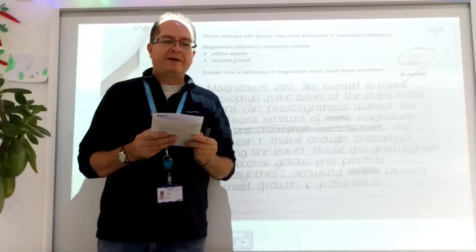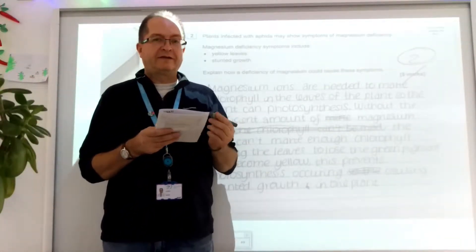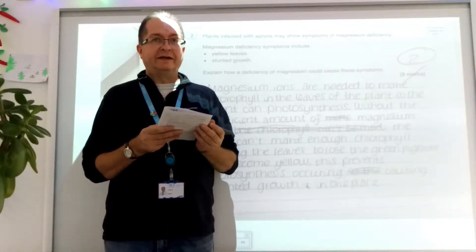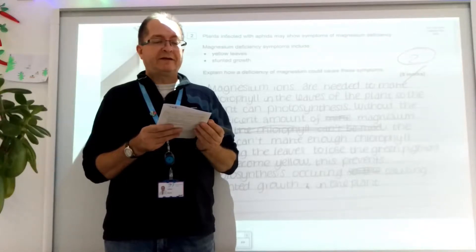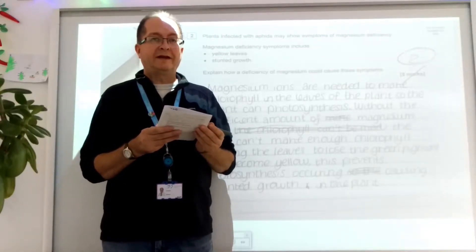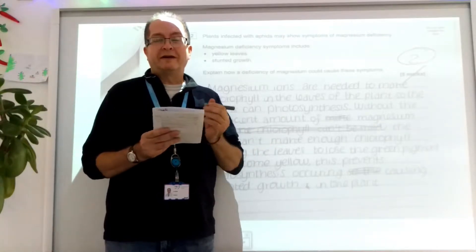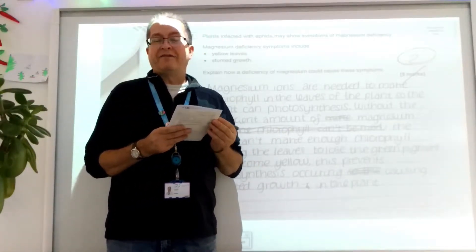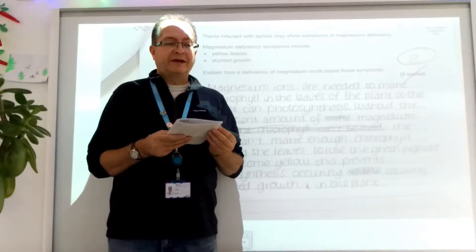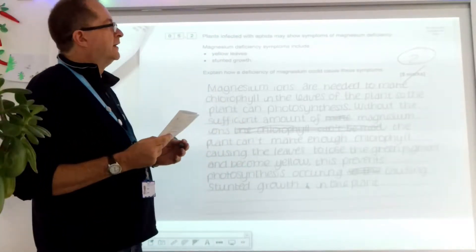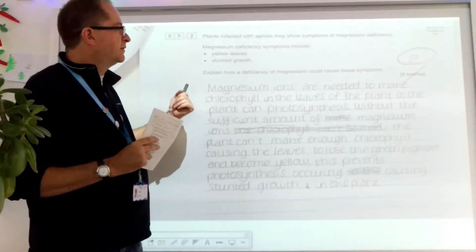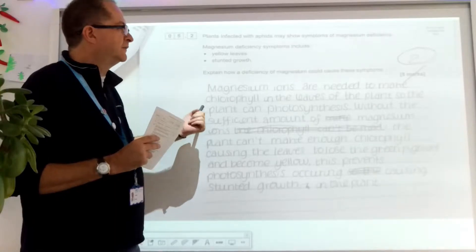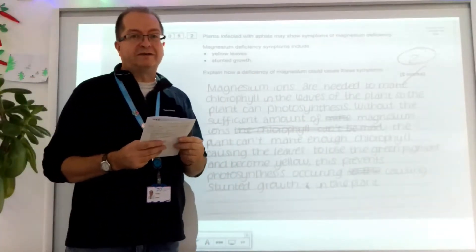So let's start off by looking at the examiner's report for this question. The examiners have said students seem to know the basics of mineral deficiencies, but they weren't keen to extrapolate using these ideas, which means they weren't keen to expand on it, they weren't keen to go backwards or forwards from these ideas and fill in the gaps where you could have got marks. So let's see what this student said. They said, magnesium ions are needed to make chlorophyll in the leaves of the plant so the plant can photosynthesize. Really good start.